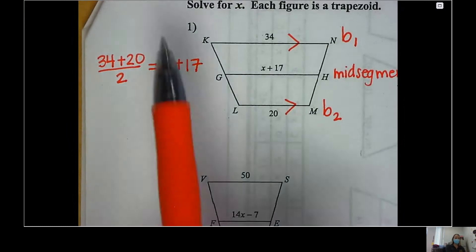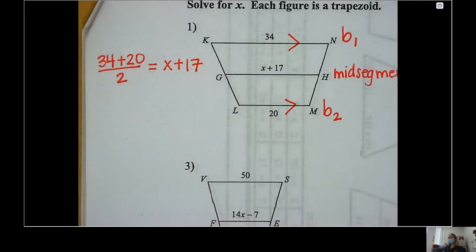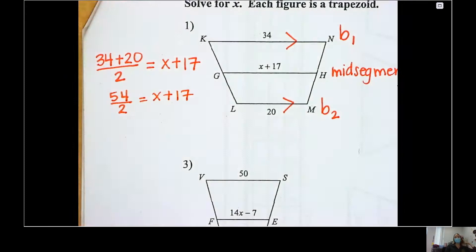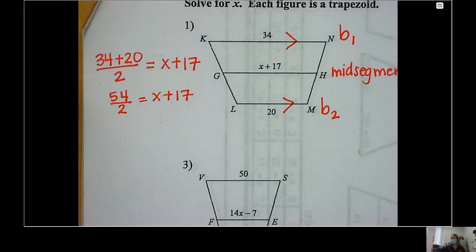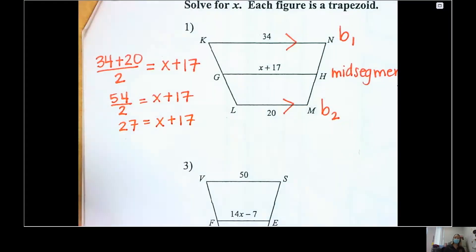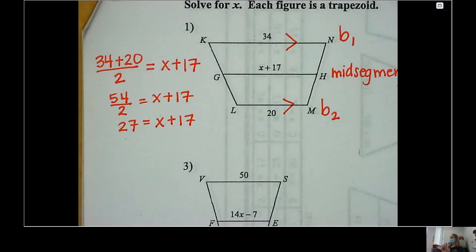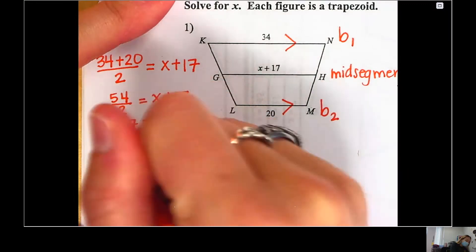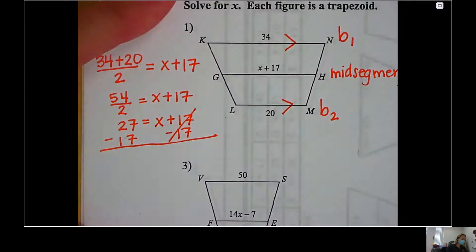We're just going to add these numbers together and divide them by two. 34 plus 20 is 54. I take 54 and divide it by 2, which gives 27. So 27 equals x plus 17. To get x by itself, subtract 17 from both sides. My final answer is x equals 10.